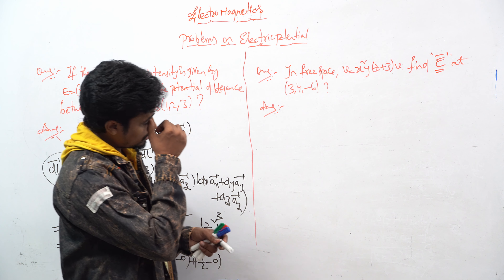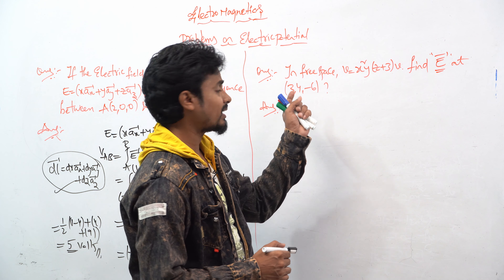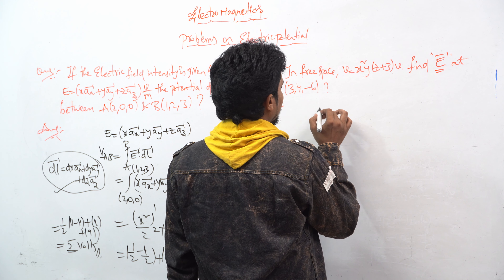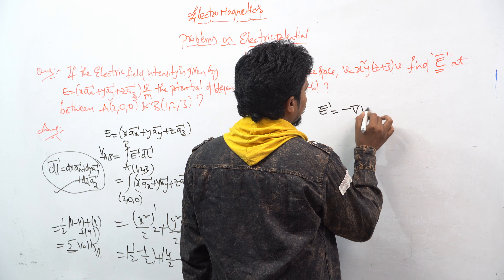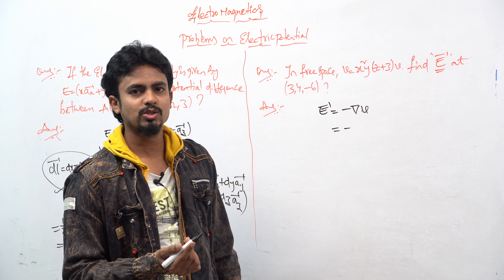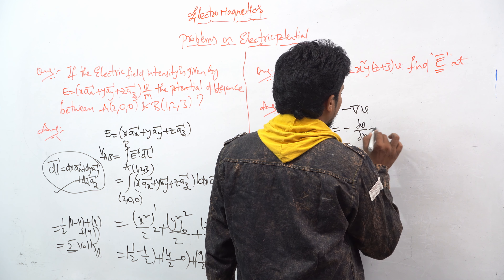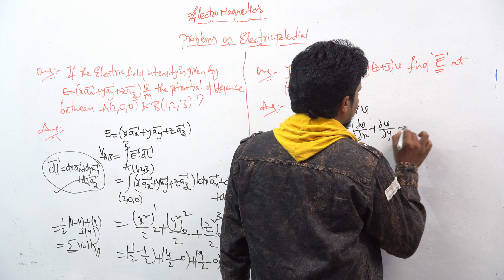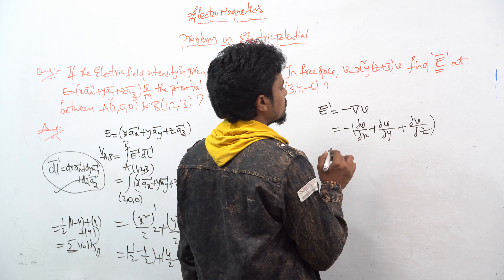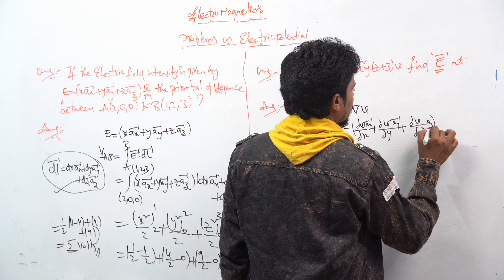Next question: in free space V = x²yz + 3 volts. Find the electric field at point (3, 4, −6). Here, the electric field Ē = −∇V. So, −∇V = −(∂V/∂x · ax̂ + ∂V/∂y · aŷ + ∂V/∂z · aẑ).